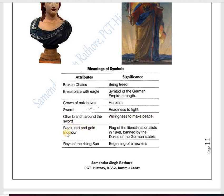The black, red, and gold tricolor was the flag of the liberal nationalists in 1848, which was banned by the dukes of the German states. Rays of the rising sun represent the beginning of a new era.